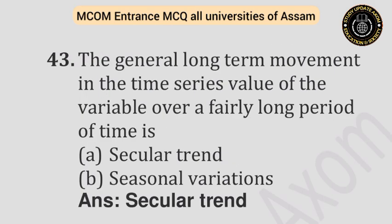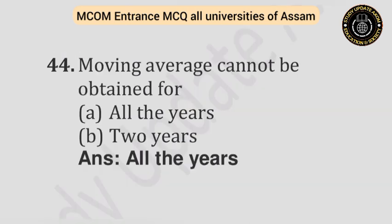Question number forty-three: The general long-term movement in the time series values of a variable over a fairly long period of time is — Option A: Secular trend. Option B: Seasonal variations. Answer is secular trend. Question number forty-four: Moving average cannot be obtained for — Option A: All the years. Option B: Two years. Answer is all the years.